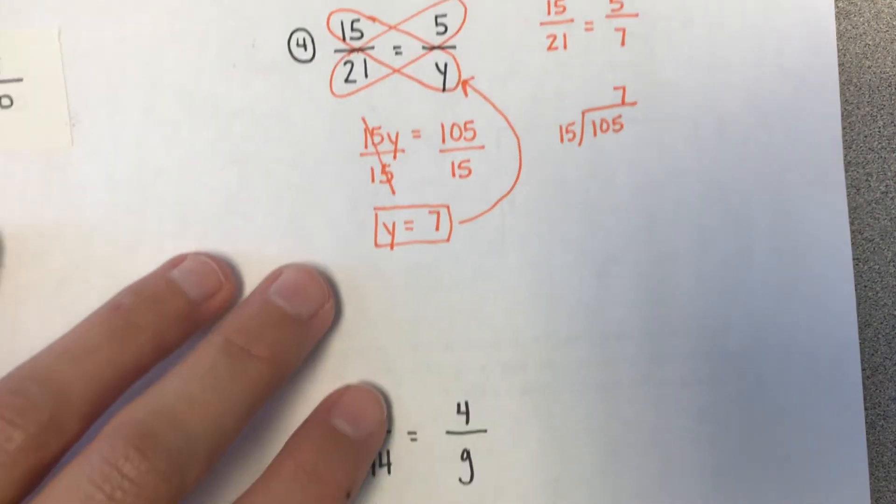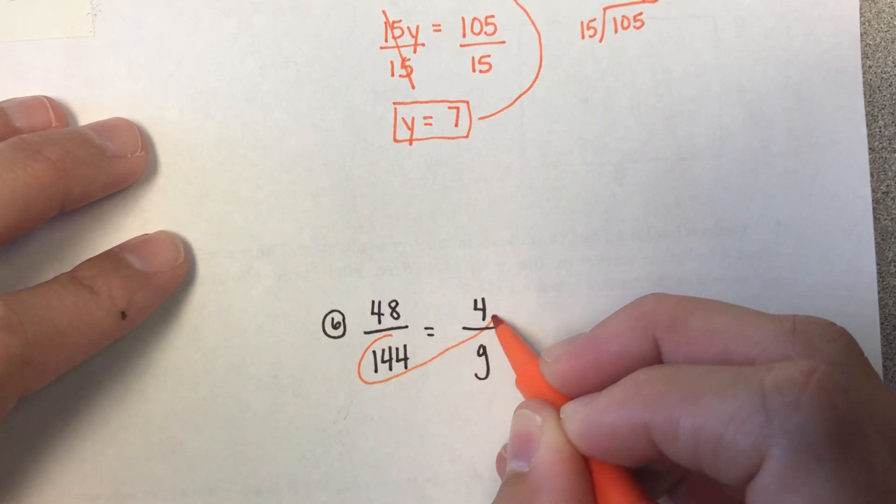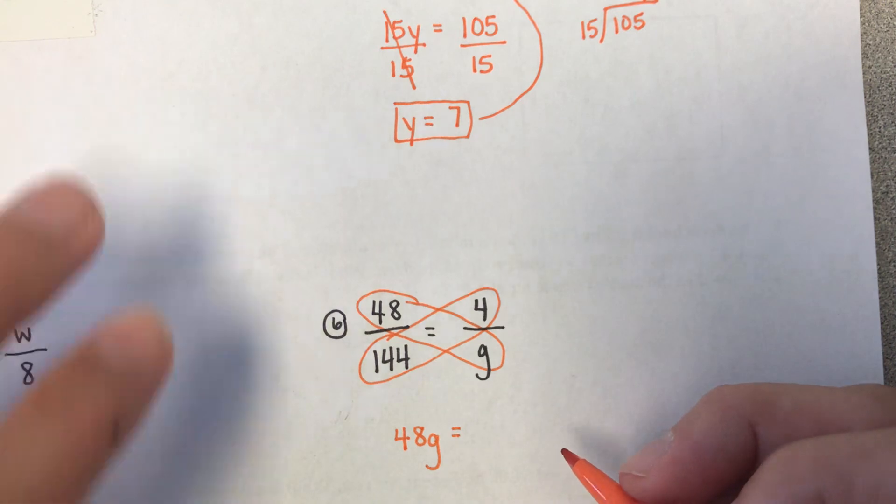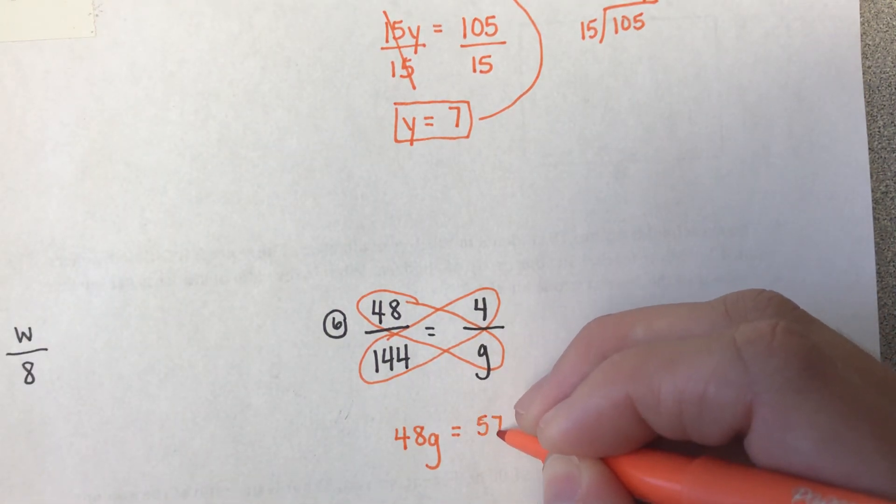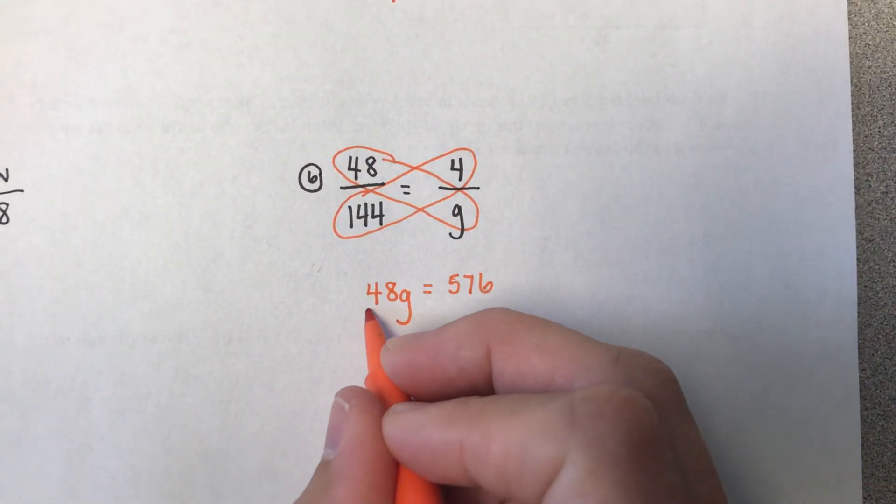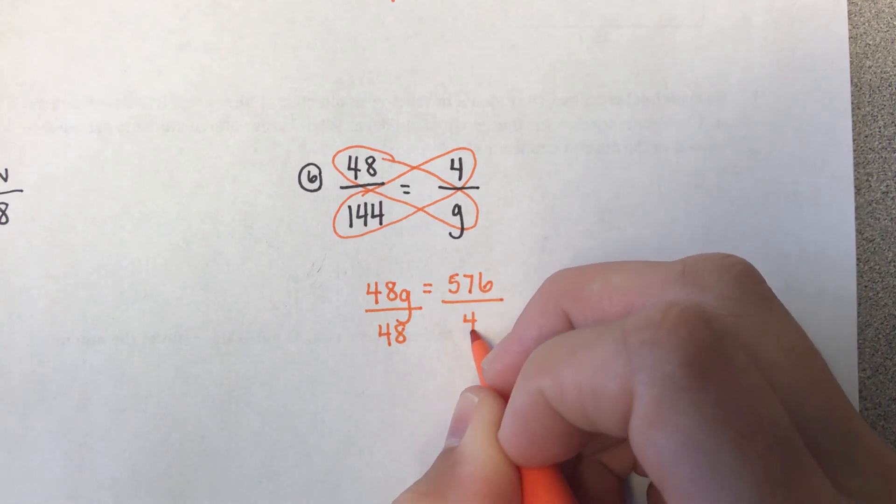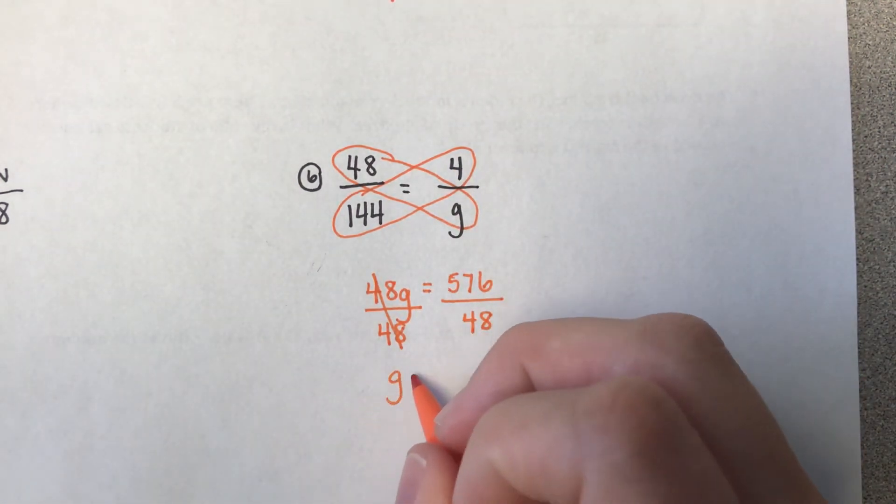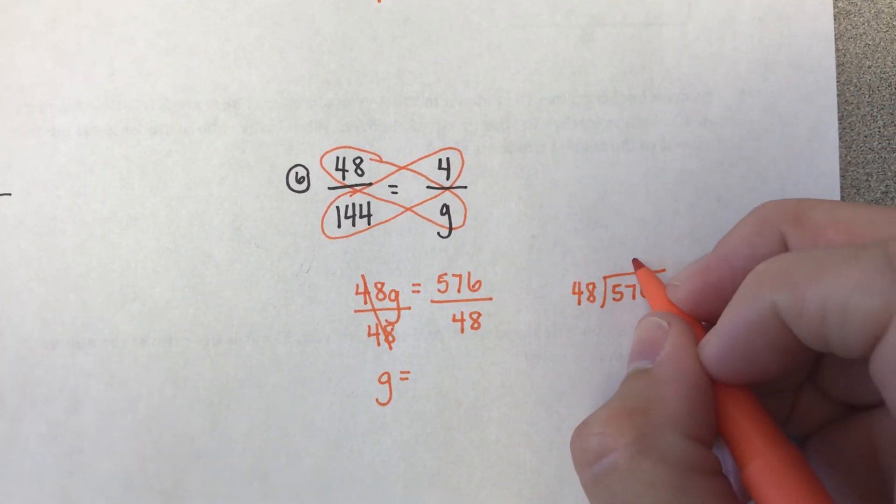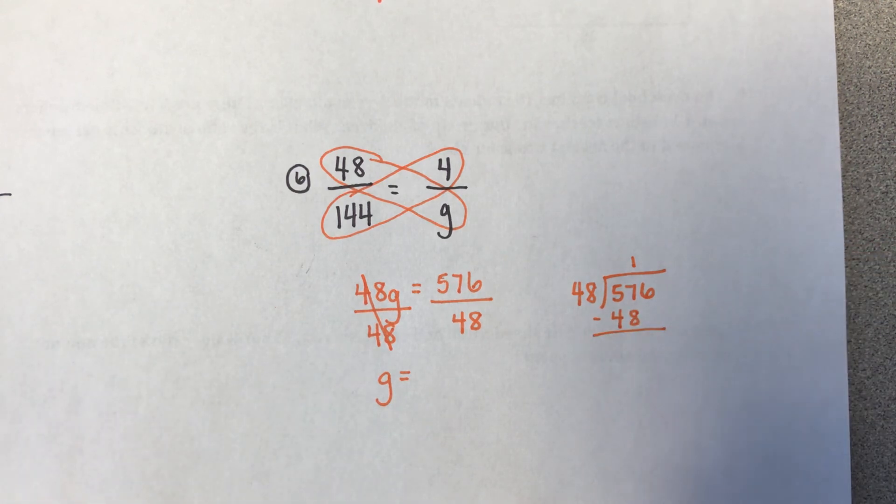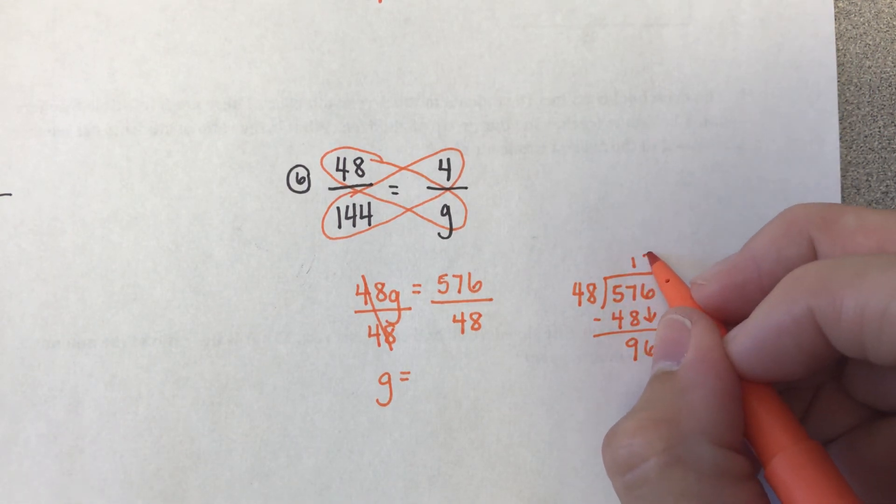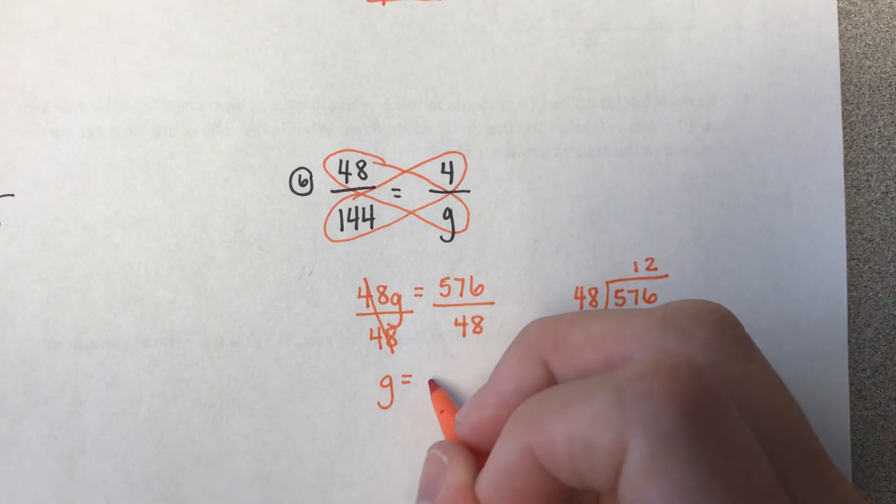Alright, so there's multiple ways to check yourself to make sure that you've done it correctly. But usually you can find those connections or those relationships to kind of help you see what you need to do. Alright, let's do one more. Cross multiply. Alright, so 48 times g is 48g. 144 times 4 gives me 576. I need to figure out what g is, so I need to get it by itself. So I need to do the inverse. So instead of doing 48 times g, I'm going to divide. Those cancel, so I'm just left with g over here. So now I need to do this long division. 48 goes into 57 one time. Alright, if I do 57 minus 48, I get 9. Bring down this 6. 48 into 6 goes 2 times. 2 times 48 is 96. So I know that g equals 12.